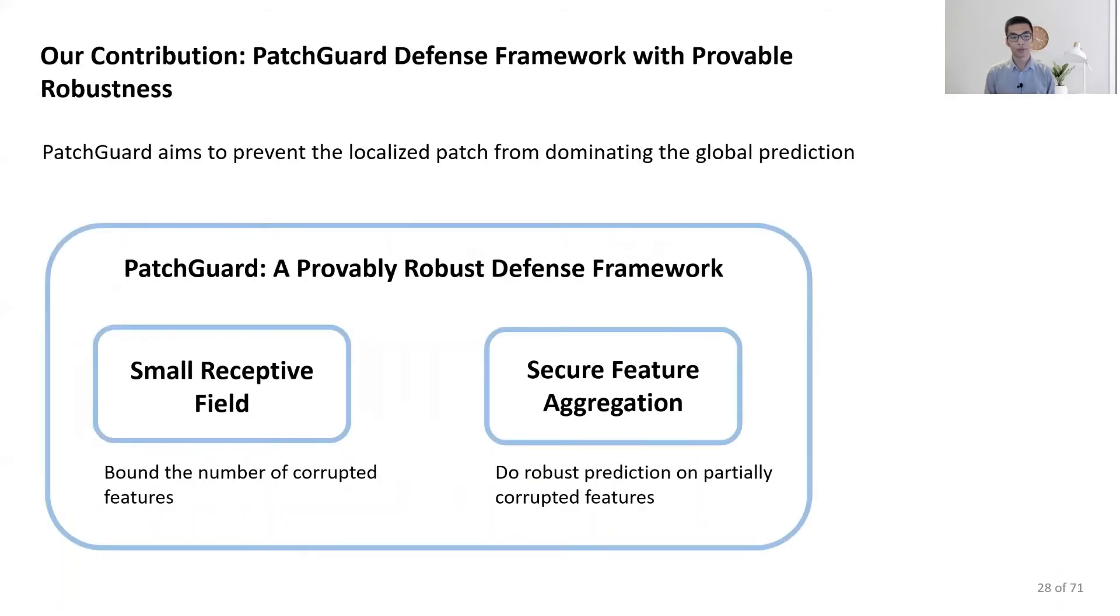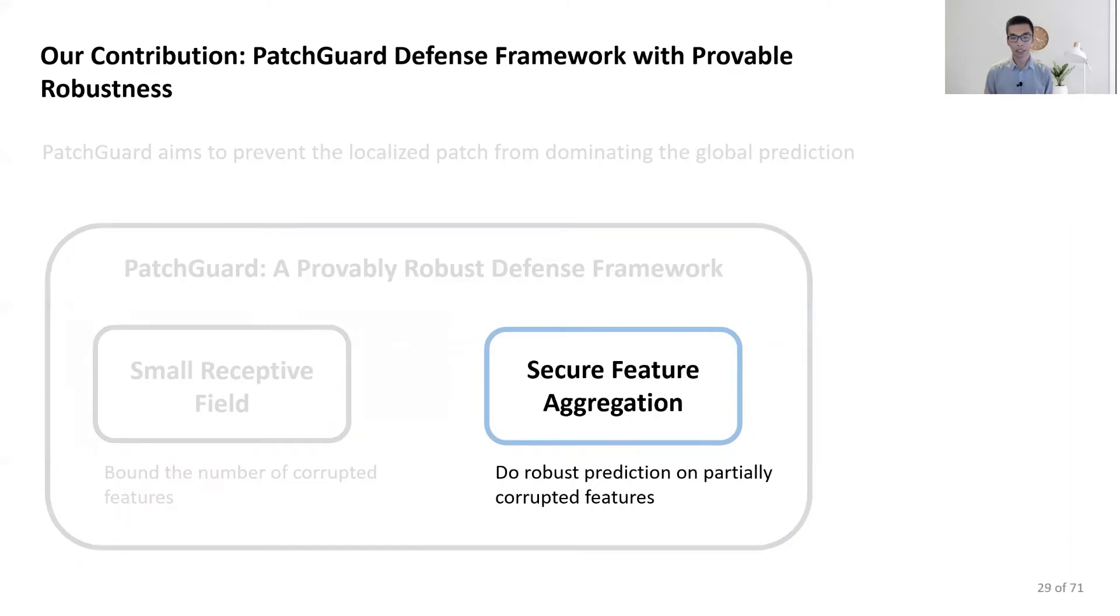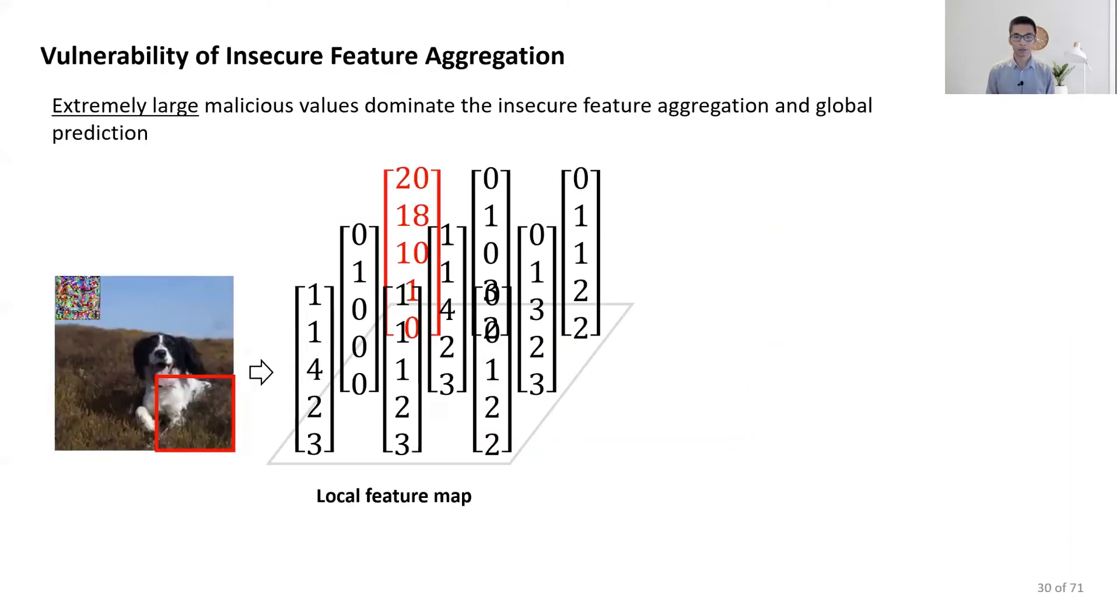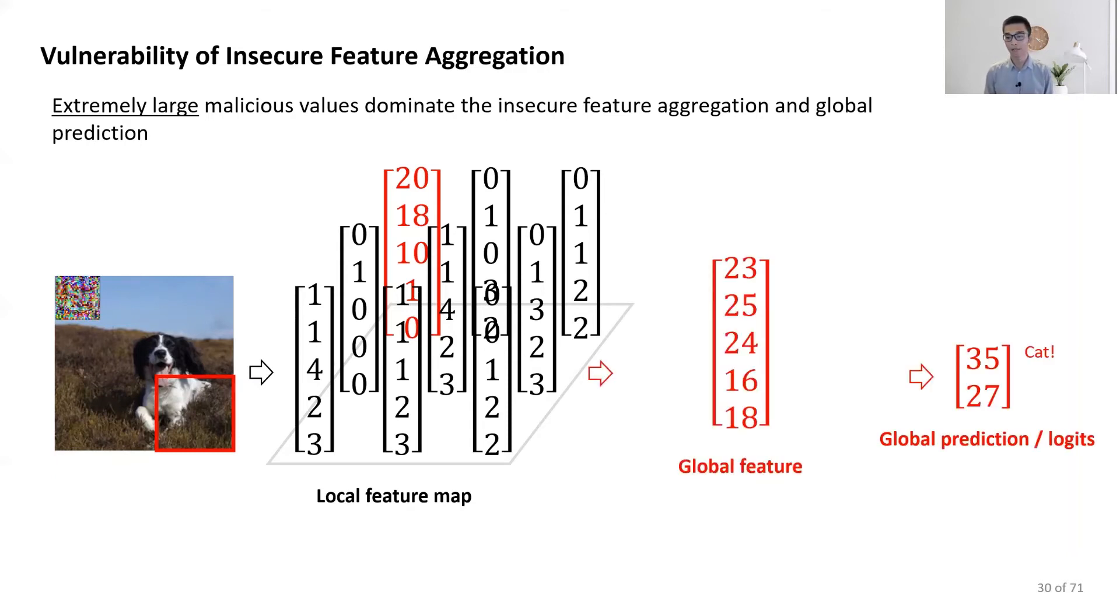Now, we know the small receptive view can bound the number of corrupted features. Next, secure feature aggregation. Going back to this example, although there is only one corrupted feature, the feature can have extremely large malicious values to dominate the feature aggregation and the final prediction.